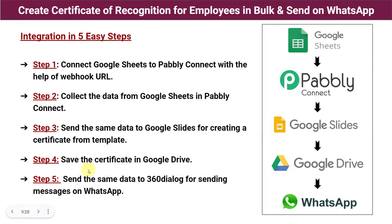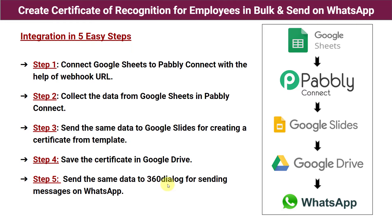In step four, we save the certificate in Google Drive. Once the certificate is created, we save it to Google Drive so we can create a shareable PDF link to transfer to employees. In step five, we send the data to 360 Dialog for sending messages on WhatsApp. WhatsApp does not allow sending messages directly, so we use the official WhatsApp API, 360 Dialog, to send messages easily.